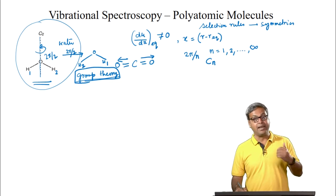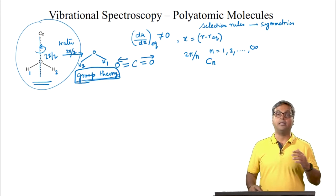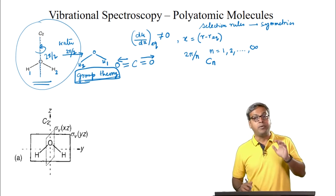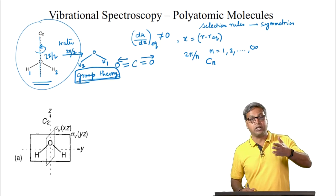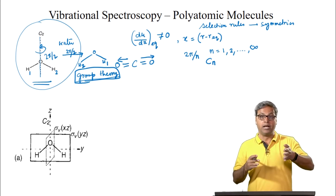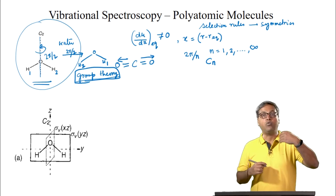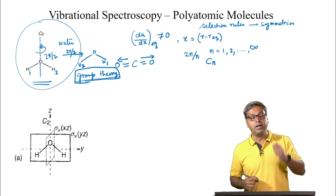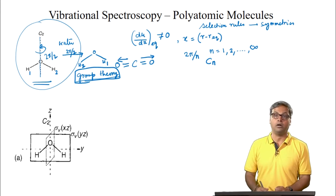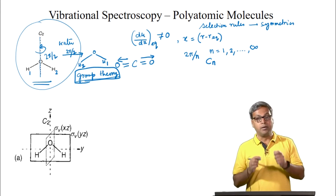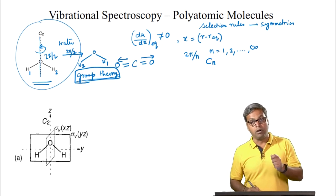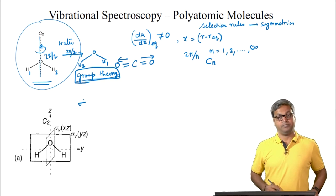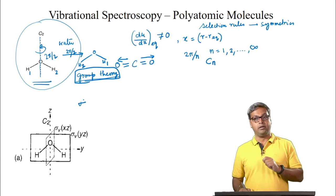There are other elements of symmetry. If a molecule has a plane of symmetry such that reflection of all the nuclei through the plane to an equal distance on the opposite side produces a configuration indistinguishable from the initial one, it is known as the plane of symmetry, and the symbol for such symmetry is sigma. Let us look again into water.